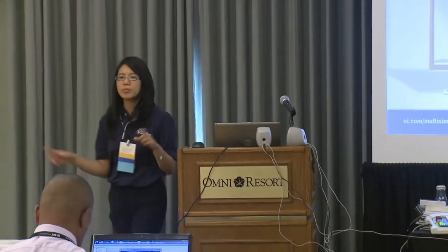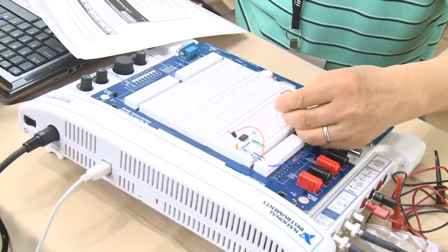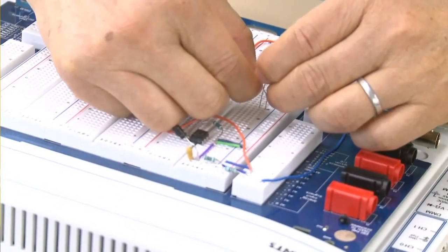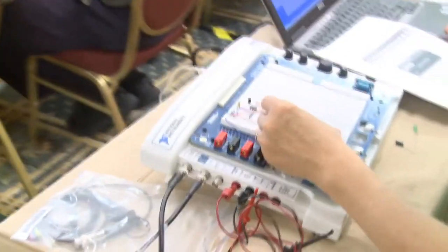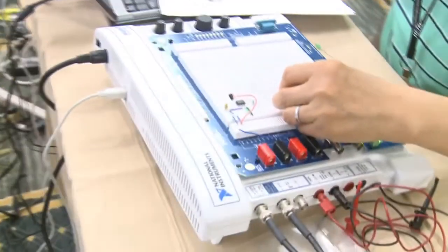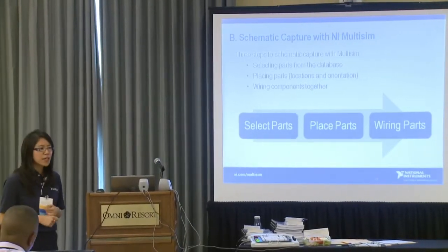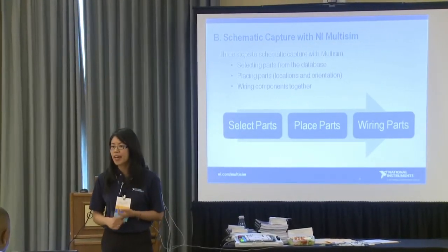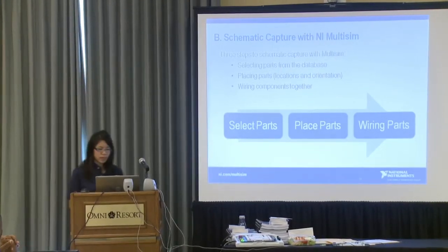So the first step I want to talk about in terms of that approach is doing the capture and simulation of this environment. When I talk about schematic capture, I'm talking about being able to take a circuit or theory that you want to implement and capture or design that process. There are really three parts to capturing a circuit: one is making sure you select the right components; two is laying down the component; and three is wiring them up. So that kind of completes your whole process.